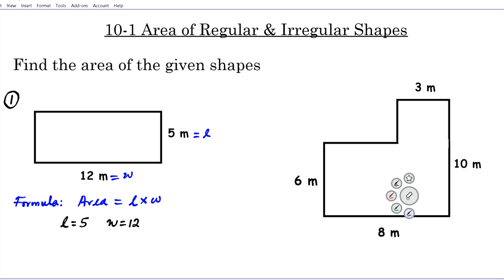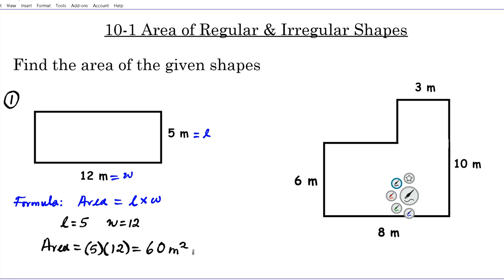We substitute the length and width into the area formula. The length is 5, multiplied by the width which is 12: 5 times 12 is 60. Since we're multiplying two meters together, the unit is meters squared. Meters squared is the dimension for area, so the answer to question one is 60 square meters.